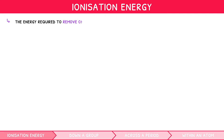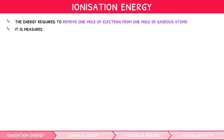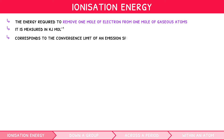Ionization energy is the energy required to remove one mole of electrons from one mole of gaseous atoms, and it is measured in kilojoules per mole. As mentioned in the penultimate IB chemistry topic 2 video, ionization energy corresponds to the convergence limit of an emission spectrum.